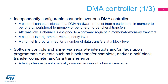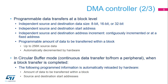A faulty channel is automatically disabled in case of a bus access error. A channel is programmed for a number of data transfers at a block level with independent source and destination data size, independent source and destination start address, independent source and destination address increment — either contiguously incremented or at a fixed address — and a programmable amount of data up to 256K source data, automatically decremented by hardware. In circular buffer mode, when a block transfer is completed, the programmed amount and the source and destination start addresses are automatically reloaded by hardware.